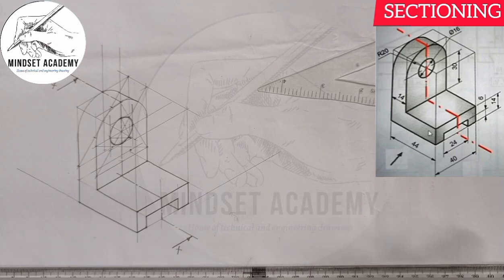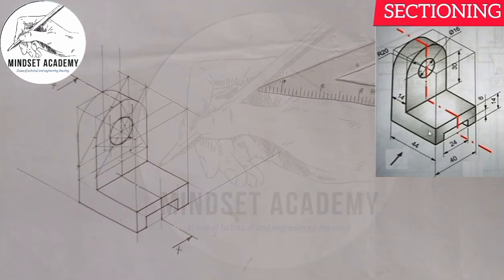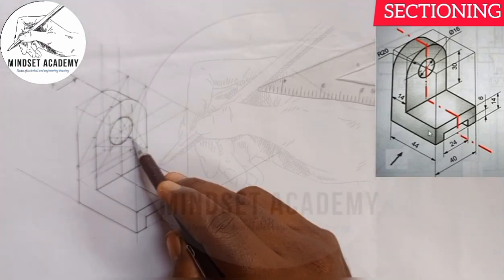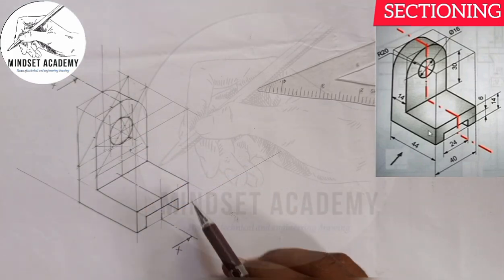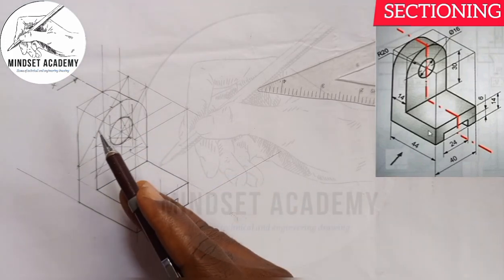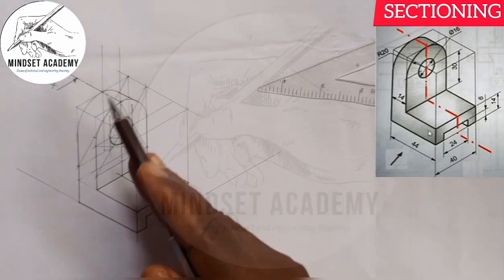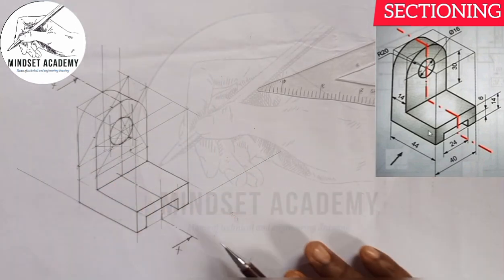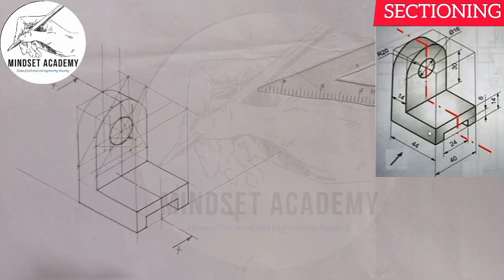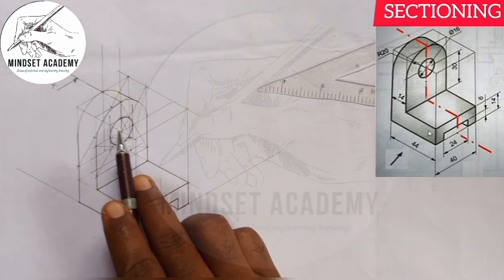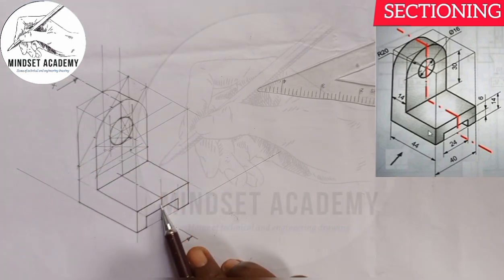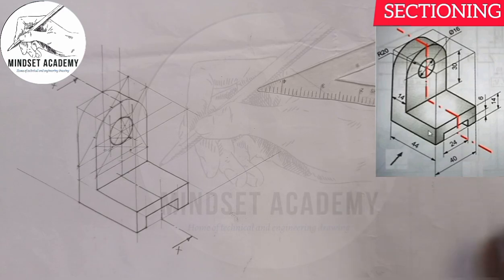Looking at direction XX, when this plane cuts this figure, we'll be looking at what remains when you're looking at it from this direction. We'll call it the end view. If it's the front elevation, we'll be seeing the section end elevation. Let's see what we're going to see when this cutting plane cuts this figure.